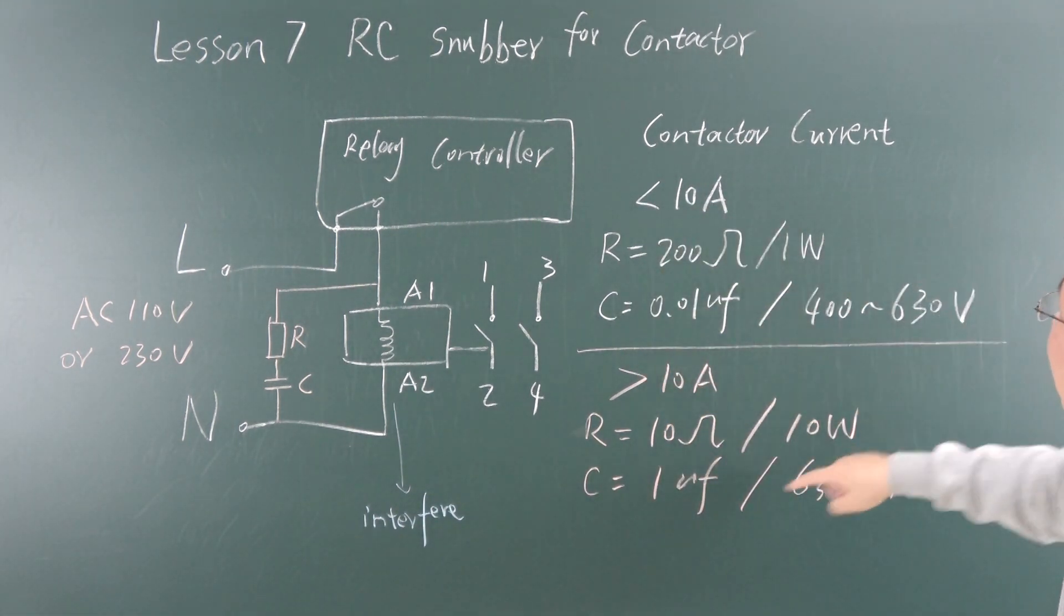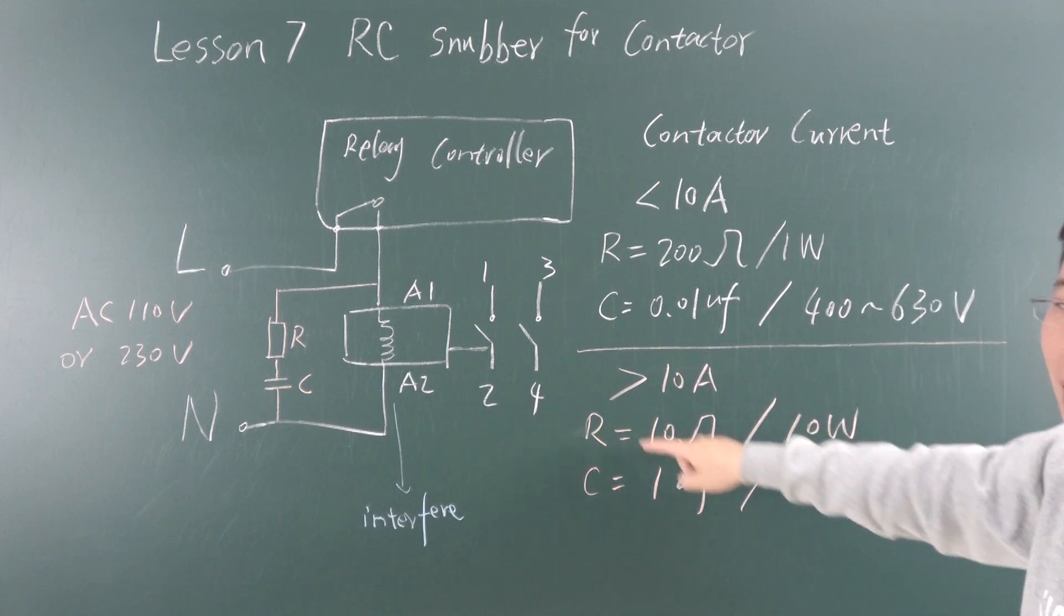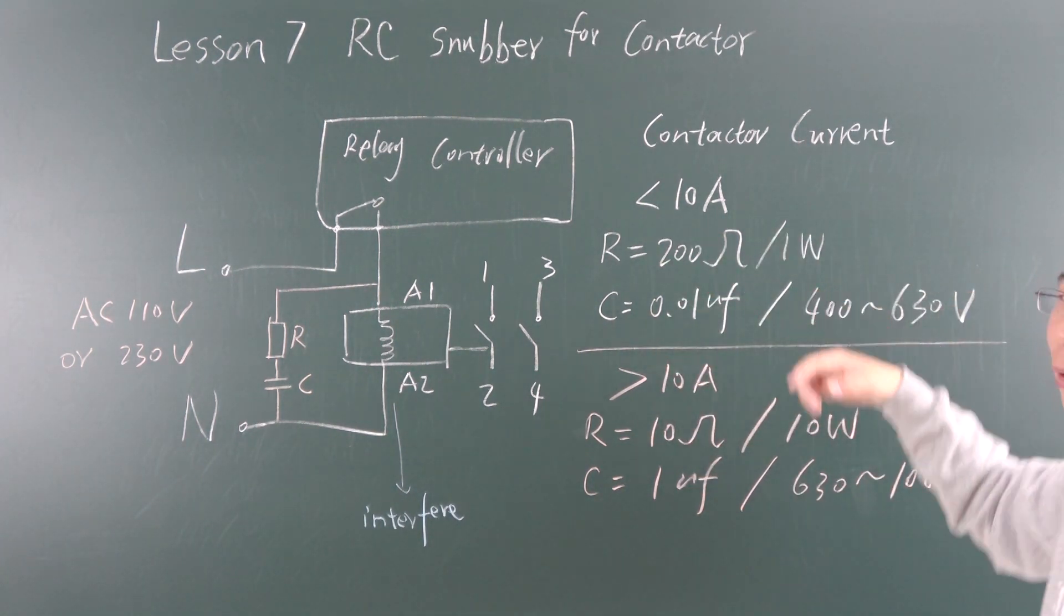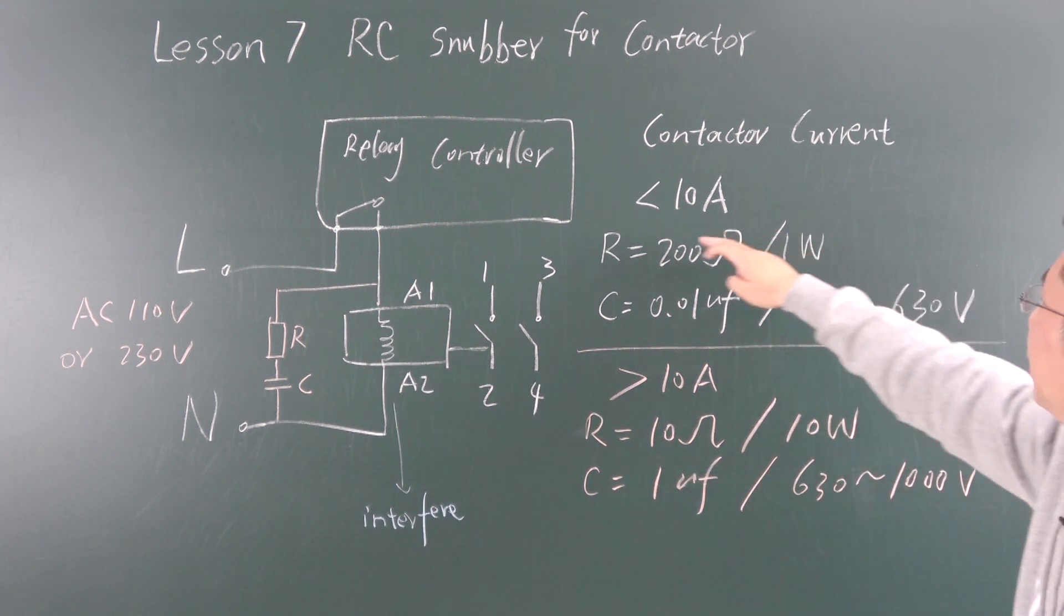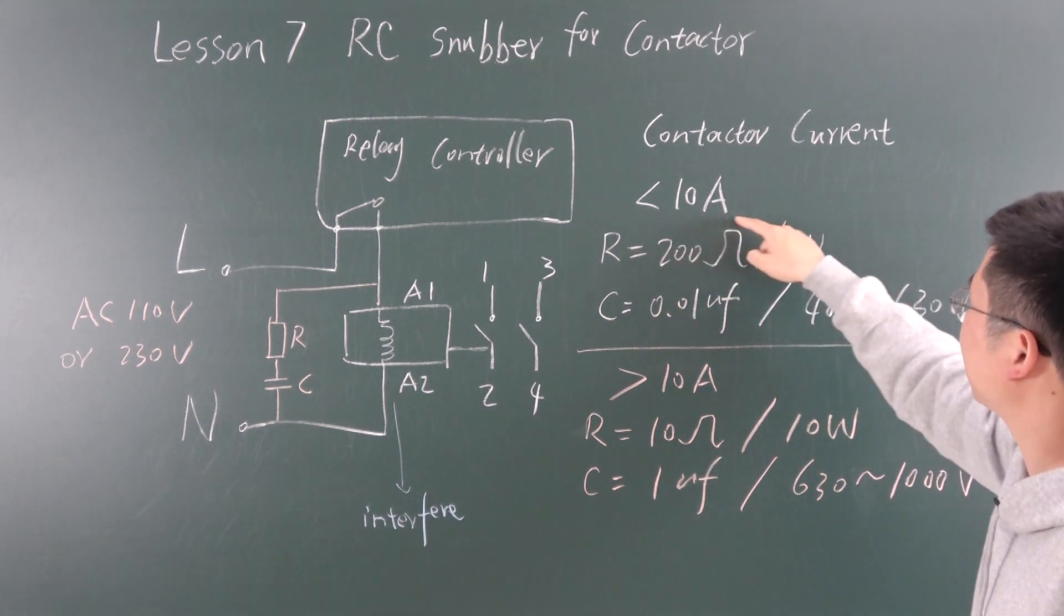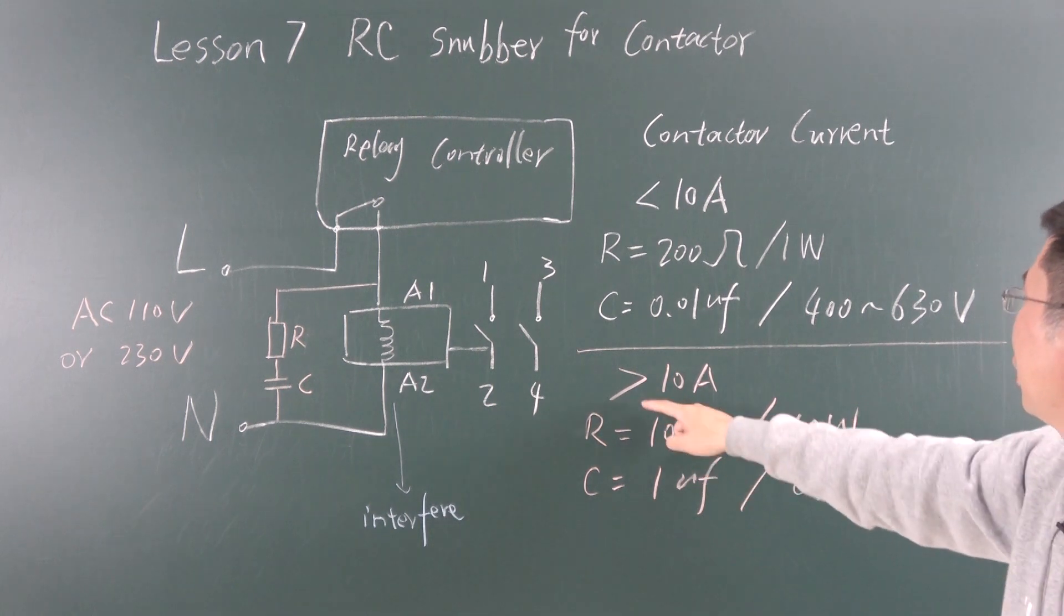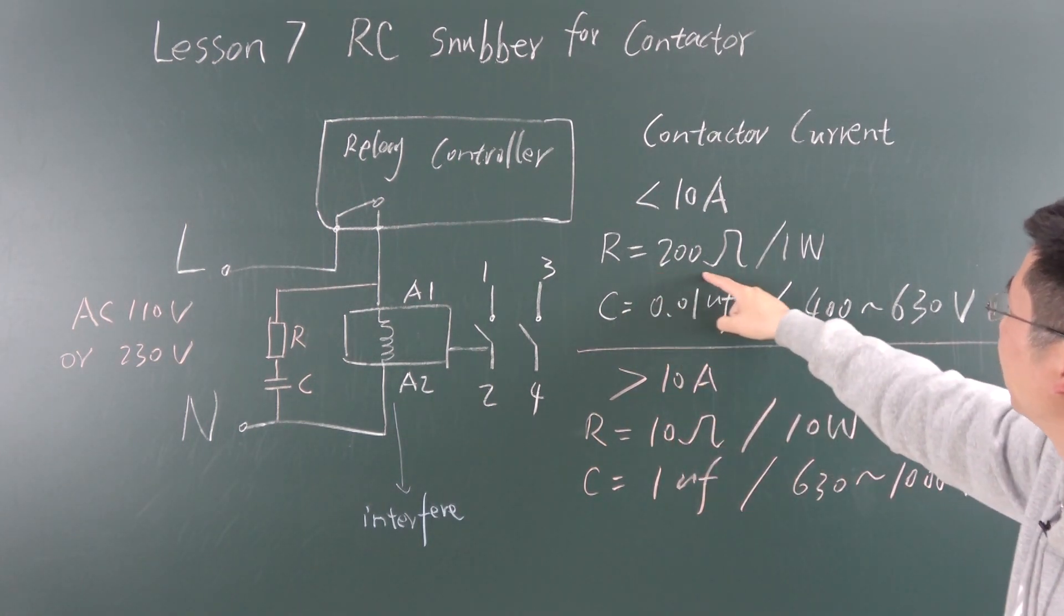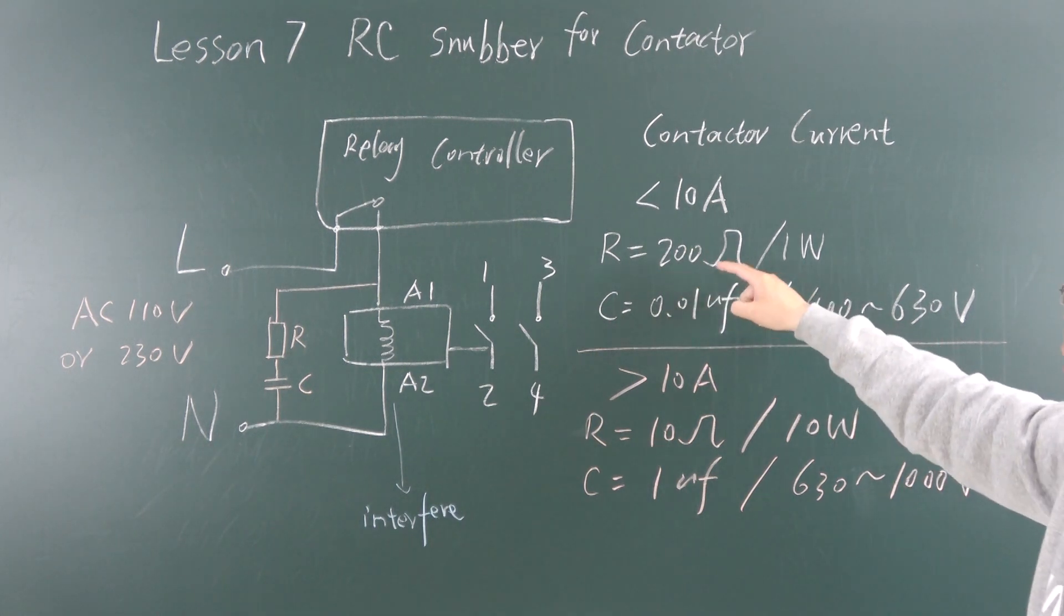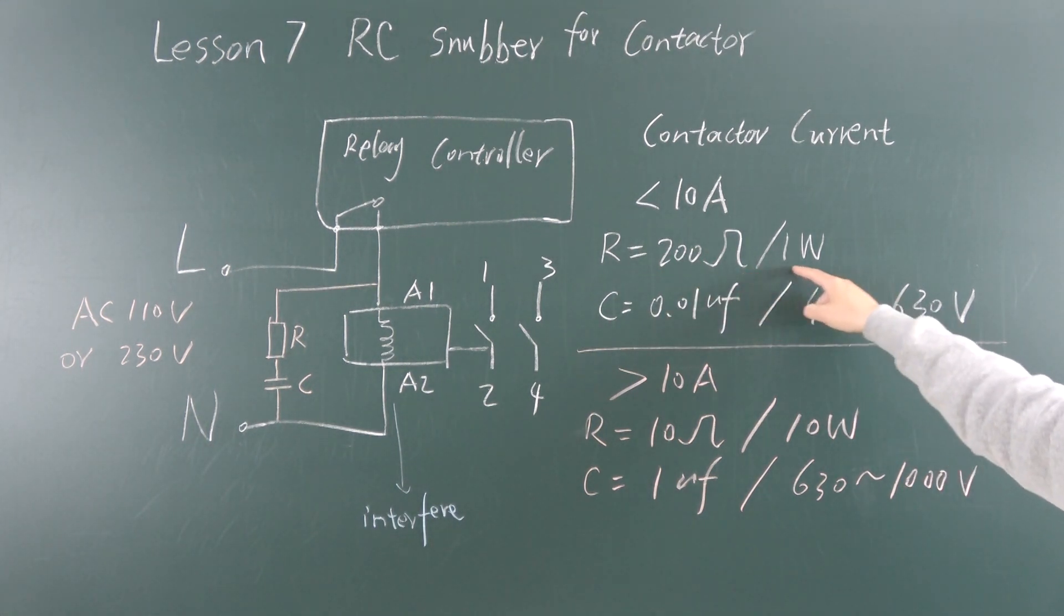This is the formula with typical values I have listed. The calculation formula you can search on Google. Usually we use this for small contact current and large contact current. For small current, you can choose R at 200 ohms and 1 watt.